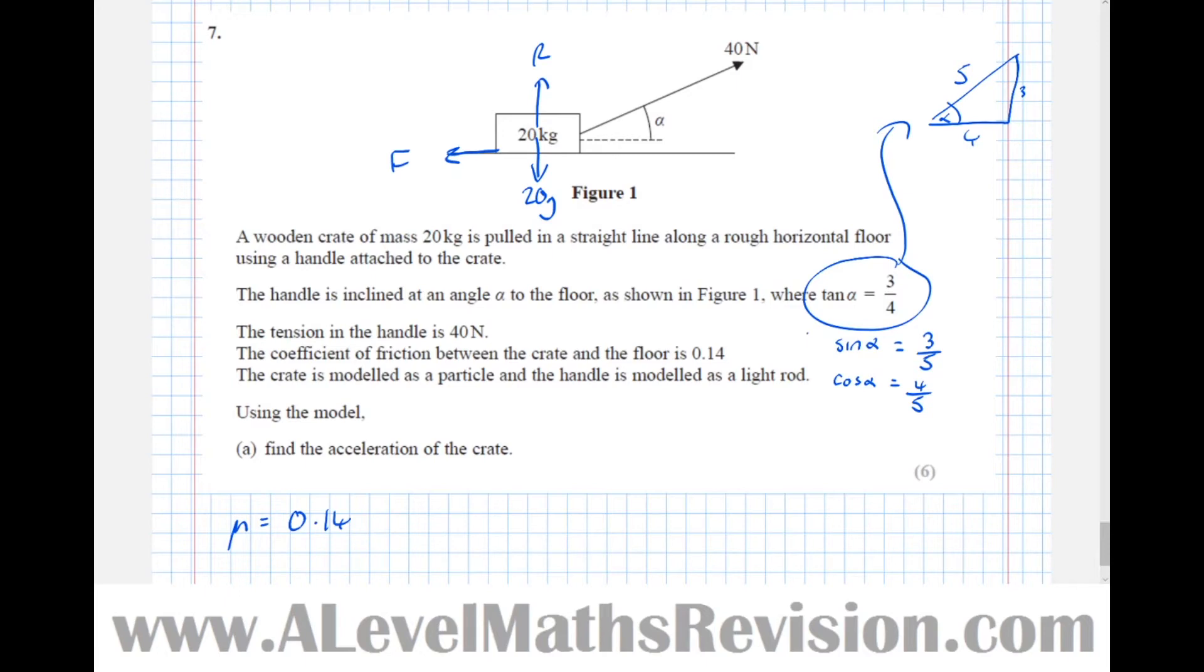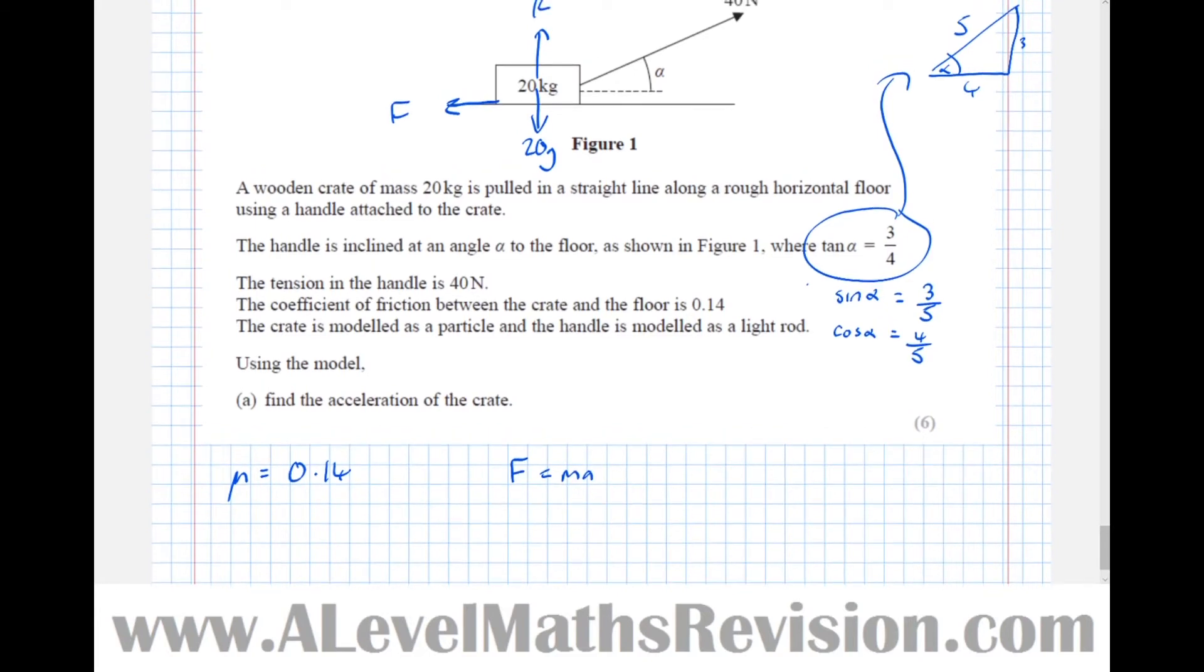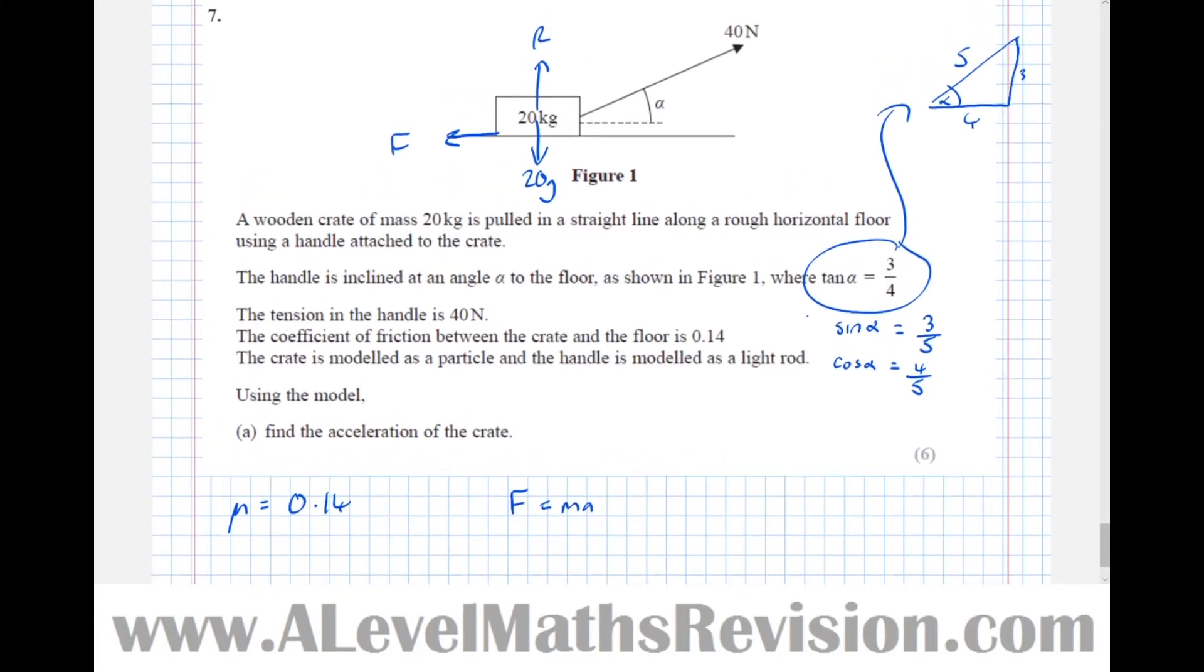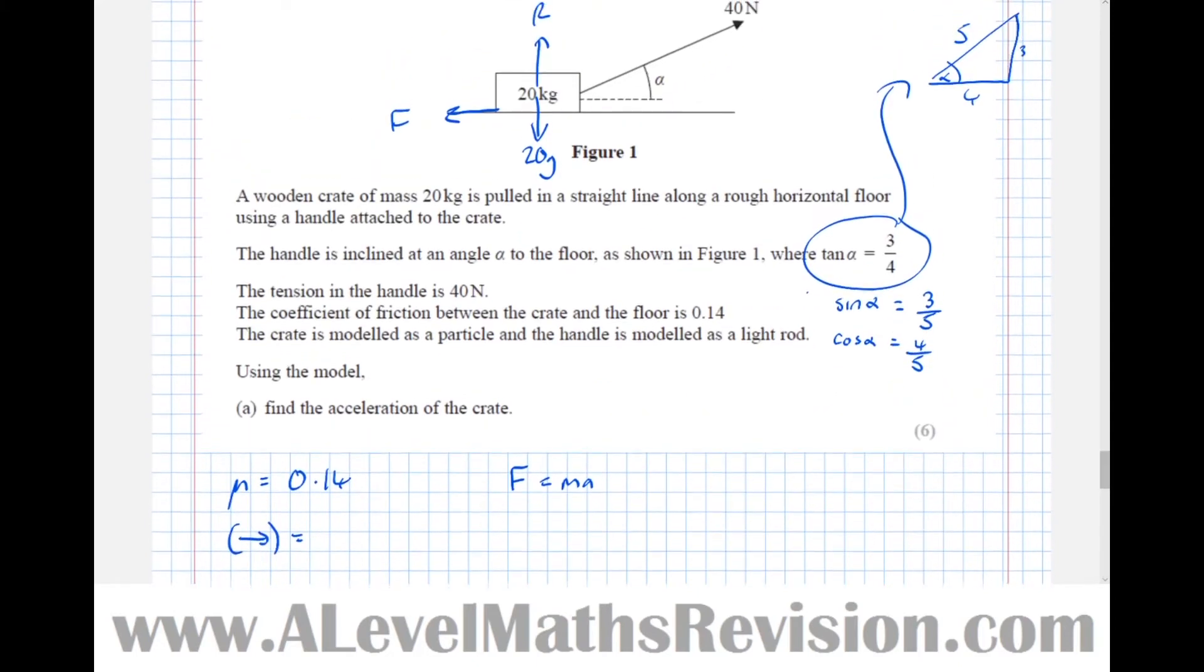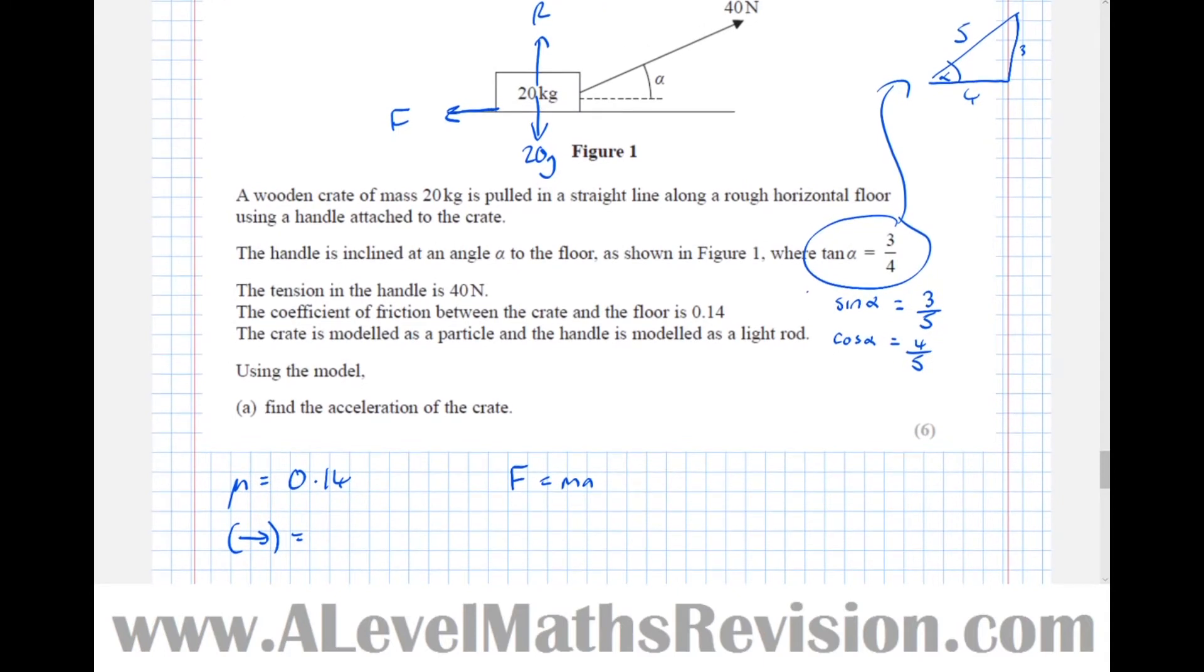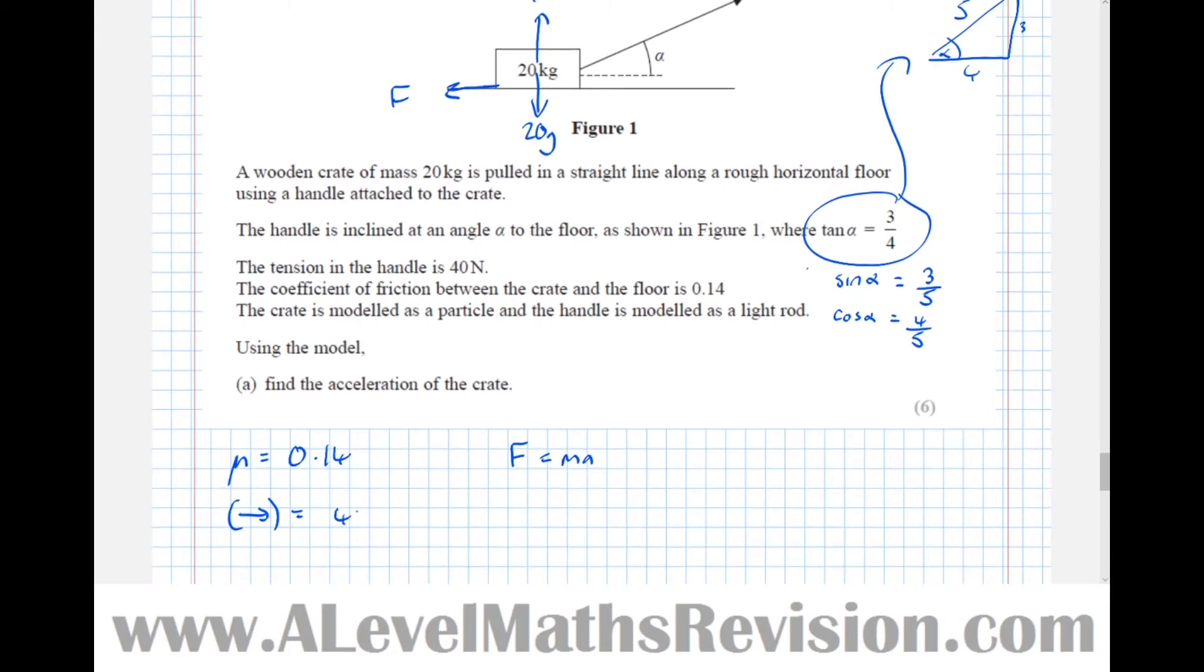Using the model to find the acceleration of the crate. Well we're going to use force equals mass times acceleration but first of all we need to do a bit of resolving. So from left to right if we resolve that way first taking right is our positive direction. So we've got 40 cos alpha in that direction in the right direction. So 40 cos alpha take our friction equals mass times acceleration equals 20 A.